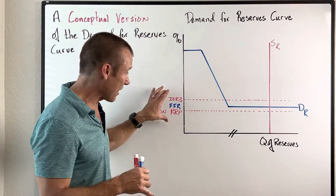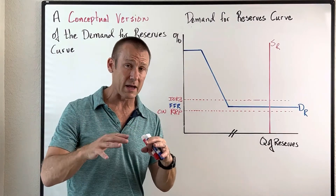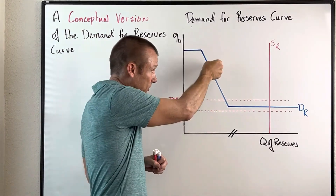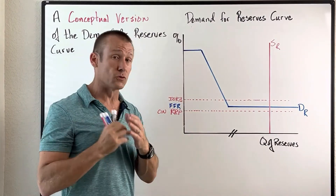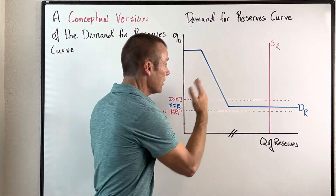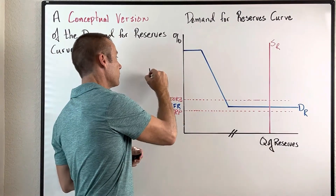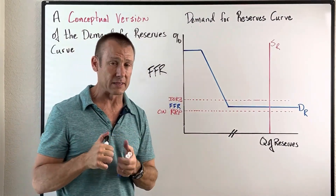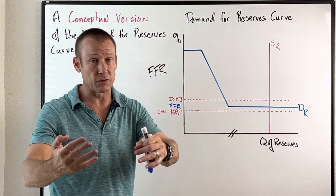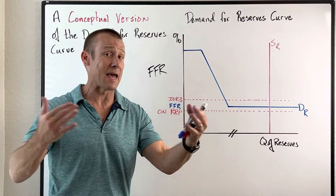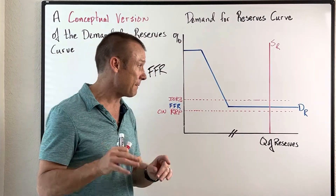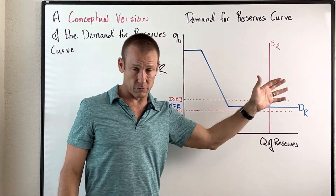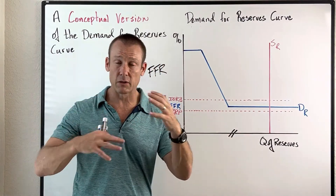Let me do a really quick recap about what's going on. When we had a Limited Reserve Framework, the supply of reserves intersected the demand for reserves curve in the steep portion, and the Fed could use open market operations — open market purchases and sales — to shift this curve left and right in that area and therefore affect the federal funds rate. But since 2008, when the Fed put a ton of reserves into the banking system, this portion of the curve extended very far to the right, and the supply curve now intersects that portion way off to the right.